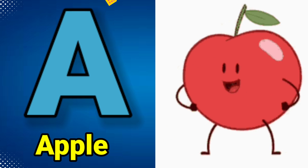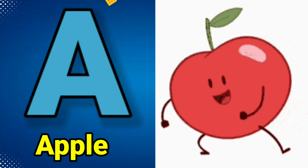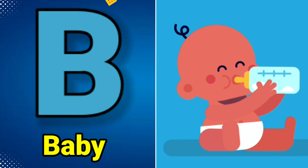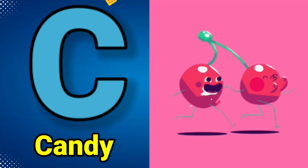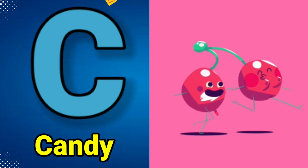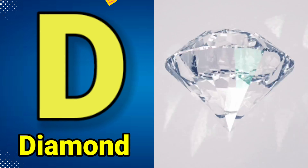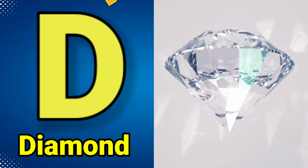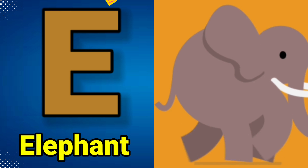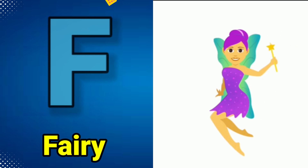A is for Apple, A-A-Apple, A-Apple. B is for Baby, B-B-Baby, B-Baby. C is for Candy, C-C-Candy, C-Candy. D is for Diamond, D-D-Diamond, D-Diamond. E is for Elephant, E-E-Elephant, E-Elephant.